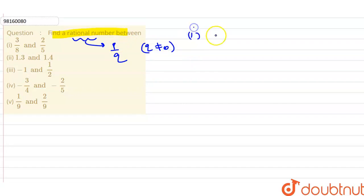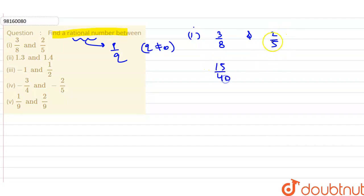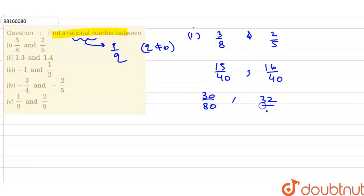In the first part, we have 3/8 and 2/5. I will find two common denominators. The denominators are 5 and 8. So 3/8 becomes 15/40 and 2/5 becomes 16/40. The rational number between them is 31/80. So the first part answer is 31/80.